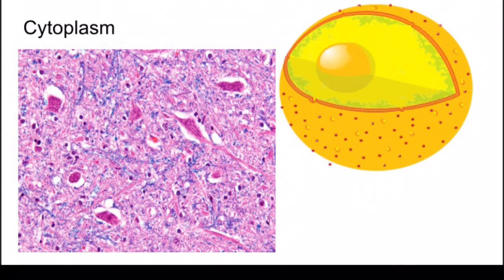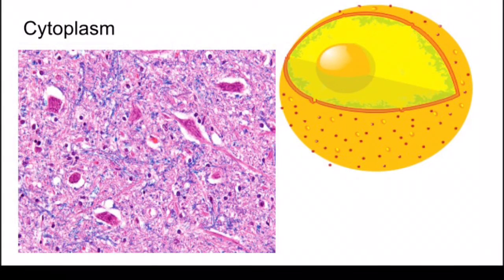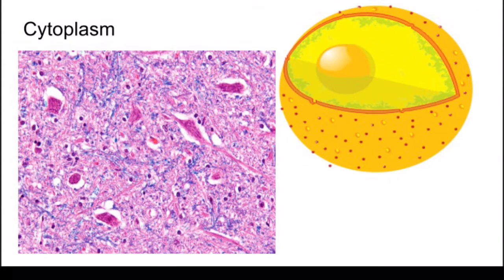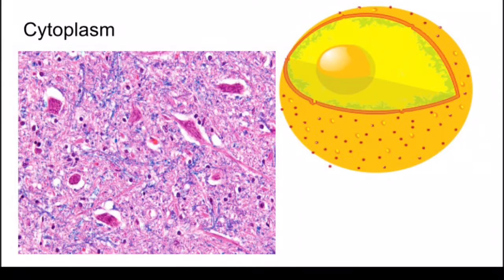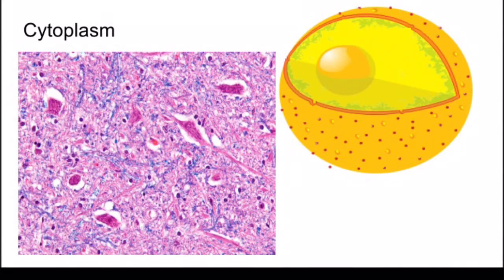Now we're going to be talking about cytoplasm. To the left we have a microscopic picture of it, and to the right we have more of a 3D model. Cytoplasm is a thick solution that fills each cell and is enclosed by the cell membrane. It is mainly composed of water, salts, and proteins. It's found everywhere but the nucleus. Although cytoplasm may appear to have no structure, it actually is highly organized. Cytoplasm is responsible for giving a cell its shape. It helps fill out the cell and keeps organelles in their place. Without cytoplasm, the cell would be deflated and materials would not be able to pass easily from one organelle to another.